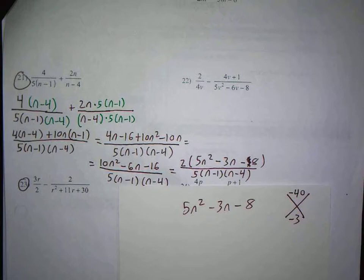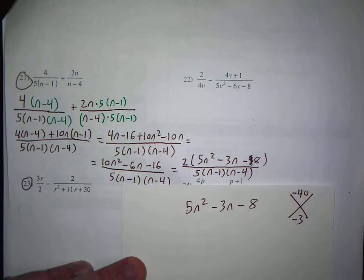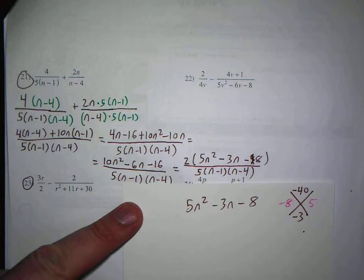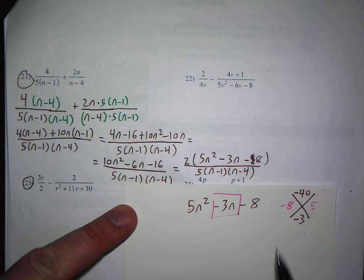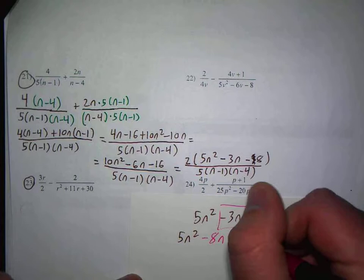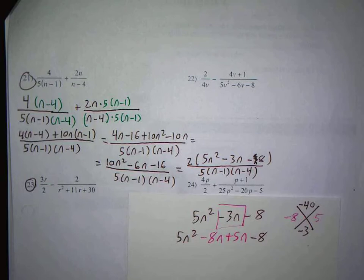It would be negative 8 plus 5, right? Correct? Correct, to get that negative 3. And then you take this and you break that up, and then negative 8 plus 5, and you guys remember factoring like this? And then you break it in half.